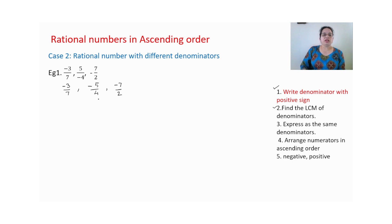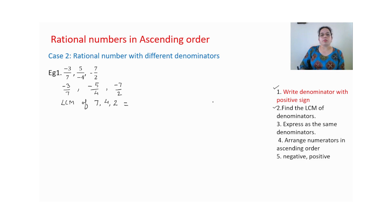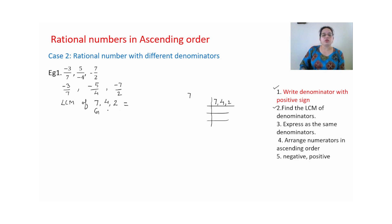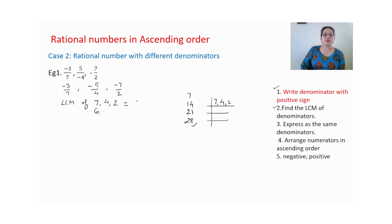Second step: find the LCM of the denominators. Since denominators are different, we need to find the LCM. LCM of 7, 4, and 2. The shortcut method: the greater number is 7, so recite the table of 7. 7 — not in 2 or 4. 14 — in 7 and 2 but not 4. 21 — not in 2. 28 — 28 is in 4 and also in 2. So LCM is 28.